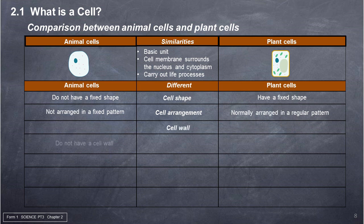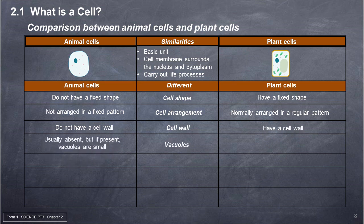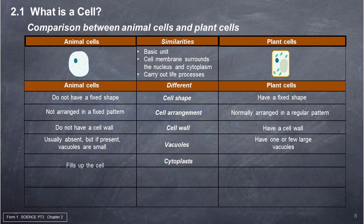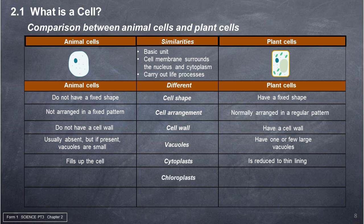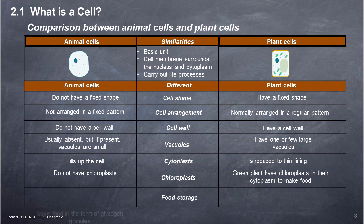Cell wall: animal cells do not have a cell wall, while plant cells have a cell wall. Vacuoles: in animal cells, vacuoles are usually absent, but if present they are small; plant cells have one or few large vacuoles. Cytoplasm fills up the animal cell but is reduced to a thin lining in plant cells. Chloroplasts: animal cells do not have chloroplasts, while green plants have chloroplasts in their cytoplasm to make food. Food storage: animal cells store food as glycogen granules, while plant cells store food as starch grains.